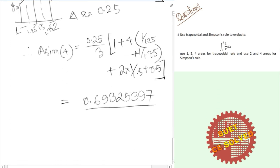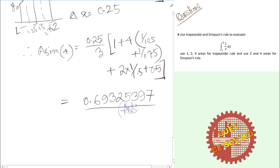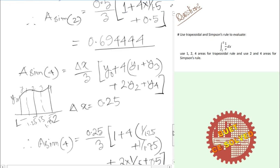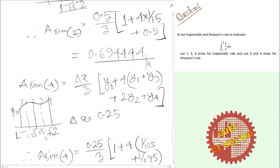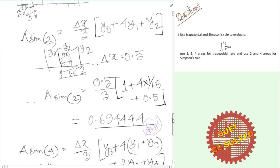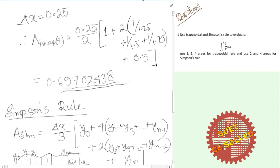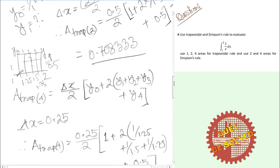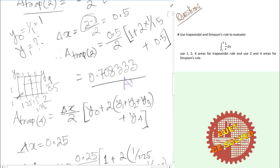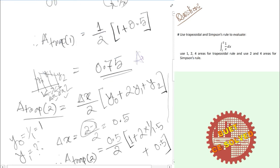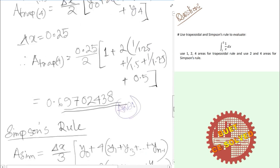In conclusion, Simpson's rule is obviously more accurate than the trapezoidal rule. This is because the trapezoidal rule approximates the curve with straight lines to form trapeziums, whereas Simpson's rule uses a higher-order polynomial approximation, making it better suited for curved functions like 1/x.